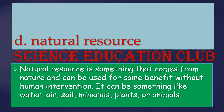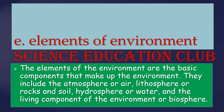Natural resource is something that comes from nature and can be used for some benefit without human intervention. It can be something like water, air, soil, minerals, plants, or animals. The elements of environment are the basic components that make up the environment. They include the atmosphere or air, lithosphere or rocks and soil, hydrosphere or water, and the living component of the environment or biosphere.